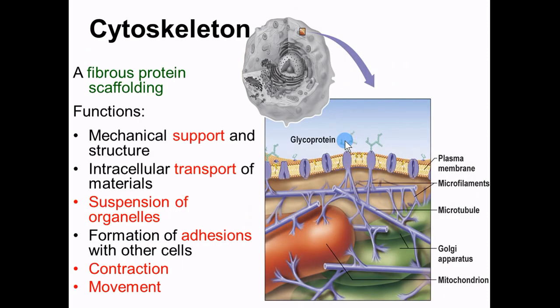First, the cytoskeleton. Here's the outside part of the membrane, and all the structure holding things in place is the skeleton — just like your skeleton. Your rib cage helps hold, support, and protect your lungs. Same idea in a cell. The cytoskeleton is made of a protein scaffolding, and it gives support and structure to the cell, holds things in place, and helps transport materials back and forth.